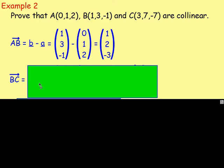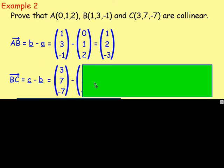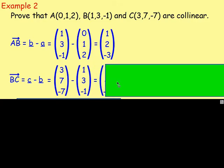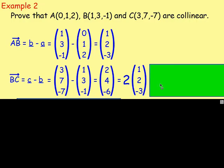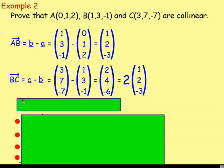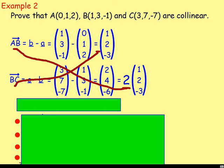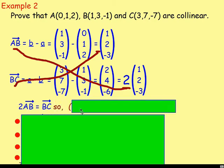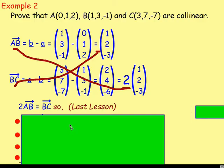For BC, it's C minus B, so that's (3, 7, -7) take away (1, 3, -1), which gives us (2, 4, -6). You can take out 2 as a common factor, so we've got 2 times the vector (1, 2, -3). Because you've got these vectors the same, you can cross over: 2 times AB is going to equal 1 times BC, which gives us 2BC equals AB.